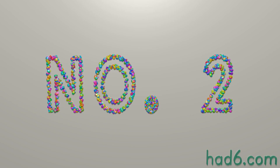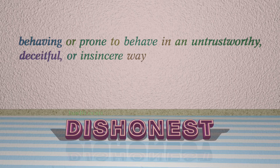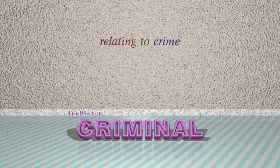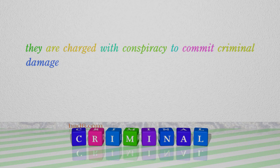Number 2: Dishonest. Which means behaving or prone to behave in an untrustworthy, deceitful, or insincere way. For example: Conspiracy to commit criminal damage.